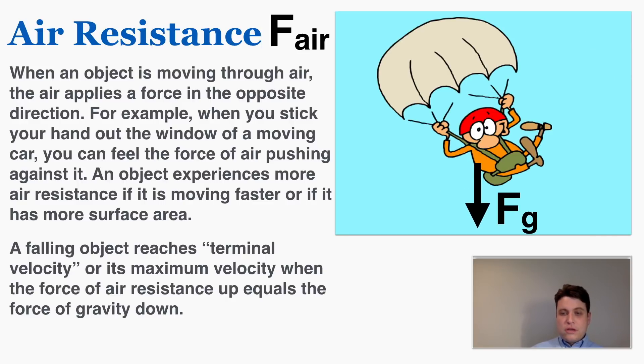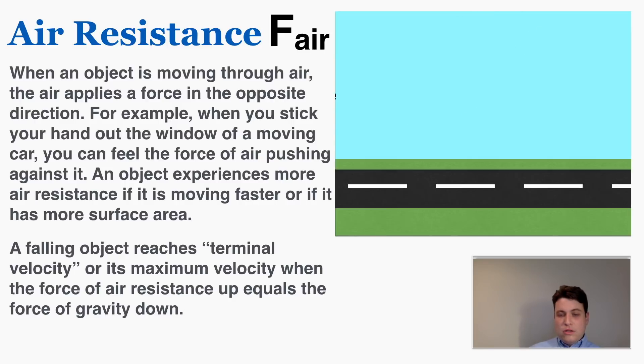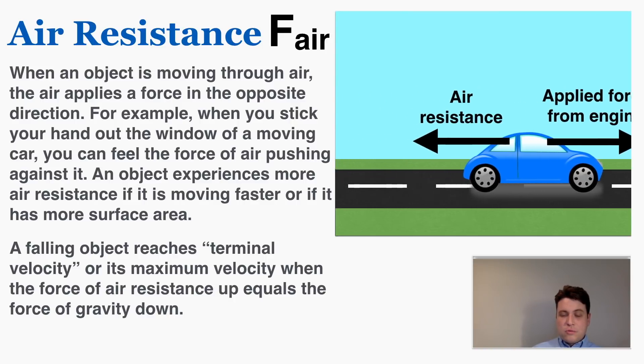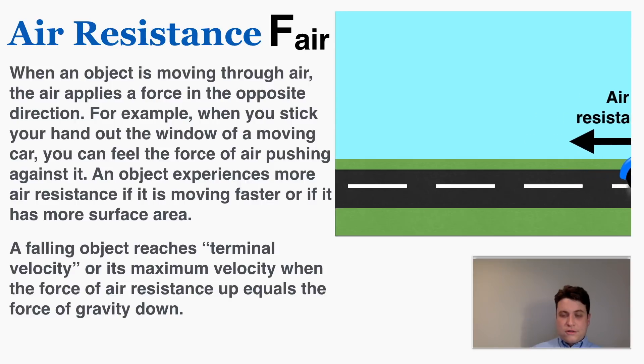Parachutes employ air resistance to slow the object down and prevent them from having a very high terminal velocity. When you're driving in your car a lot of times the only two forces to the left and right are a small applied force from the engine and air resistance pushing back against it. As long as you can push back against the air resistance of your car that's basically all that you need to keep it going.